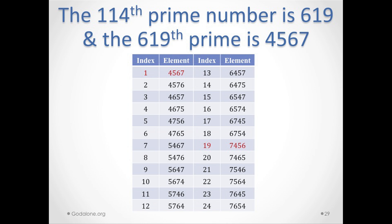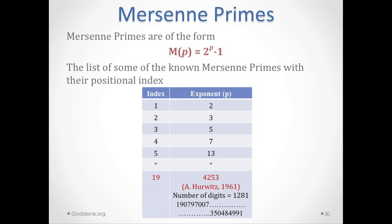Mersenne primes: every once in a while you hear that a new prime number was discovered. Mersenne primes are in the form 2 to the p minus 1, where the exponent p is itself a prime number. The list of known Mersenne primes with their positional indices is shown here — you can look at the Wikipedia page for these numbers and their associated values. The numbers are very large so I didn't include them.